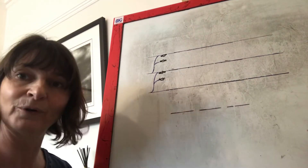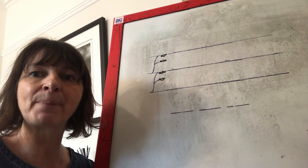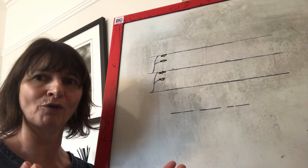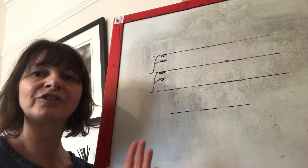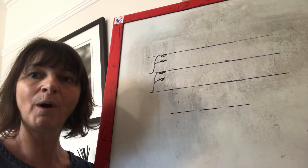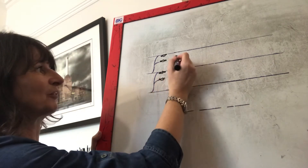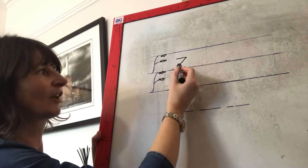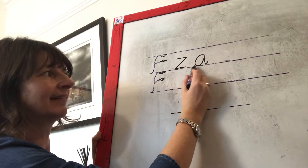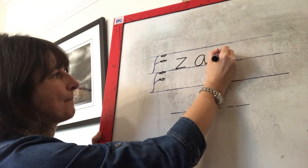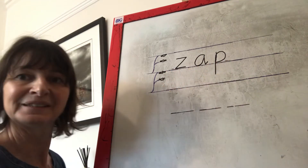You ready for your next word? Rub your boards clean. Show me your robot arms. The next word is zap. Can you say that? Zap. Let's segment the word zap: Z-a-p. Zap. Yes, the first sound is our new sound — push across, slide down, push across. What was the last sound in zap? Well done, it's a p. Let's say the sounds and read the word: Z-a-p. Zap. Well done.